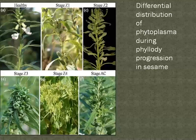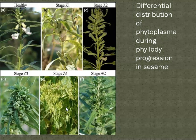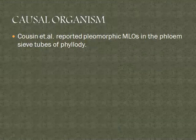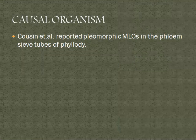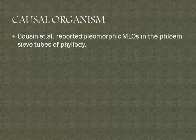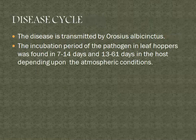You can see here healthy plants and the stages showing how they become affected and destroyed. Phytoplasma propagates in nature through causal organisms. Cosine et al. reported pleomorphic MLOs in phyllody-affected plants. These phytoplasma organisms particularly target and fill the phloem sieve tubes of affected plants.